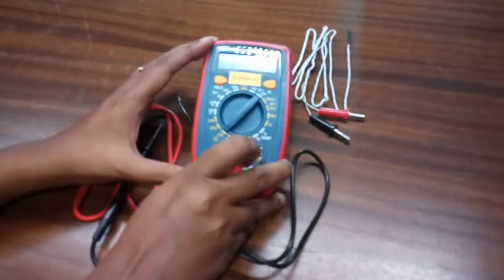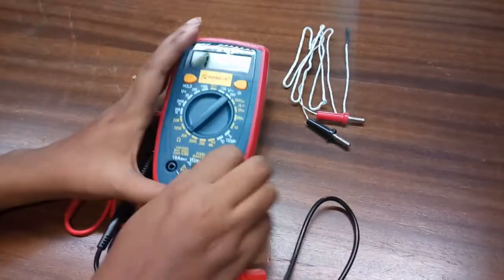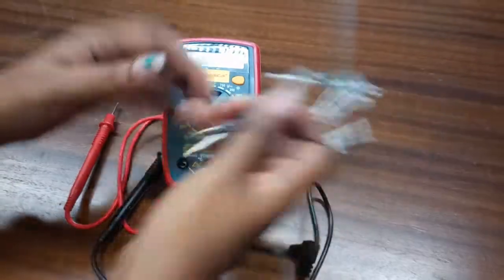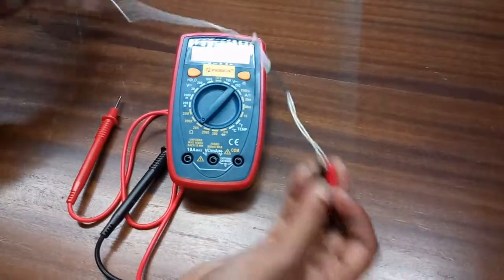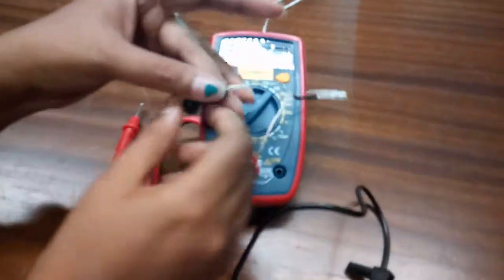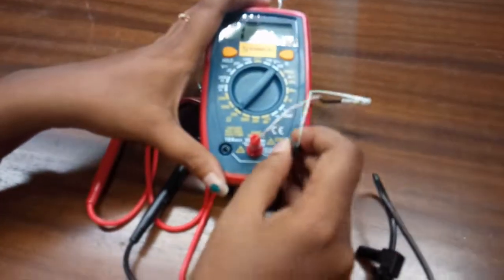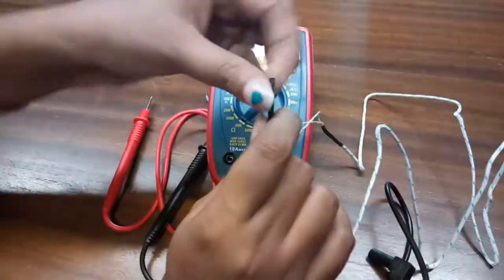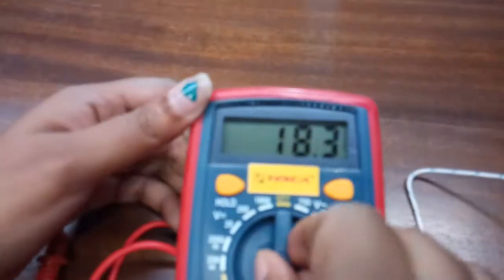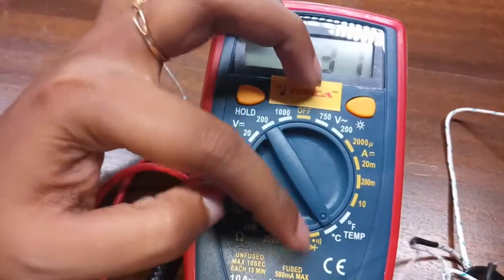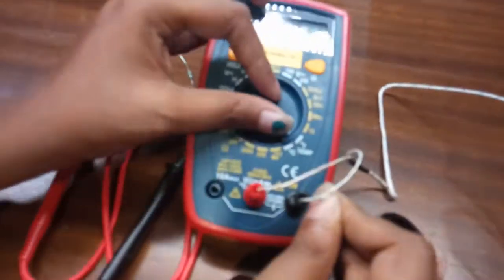This is now, with this multimeter also comes this testing probe. This is to measure the temperature. So connect the red one here at the positive terminal and the black one in the negative terminal and with this, you can measure temperature. For this, you need to select the mode. This is Celsius and this is Fahrenheit.